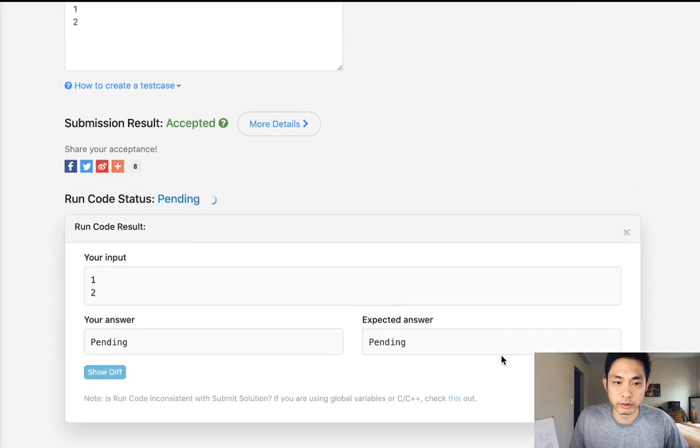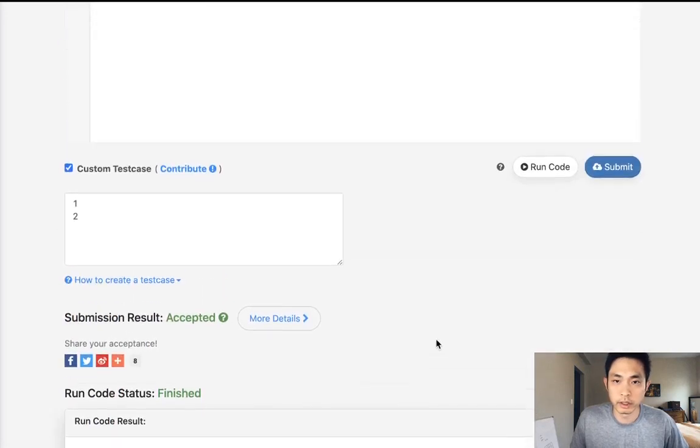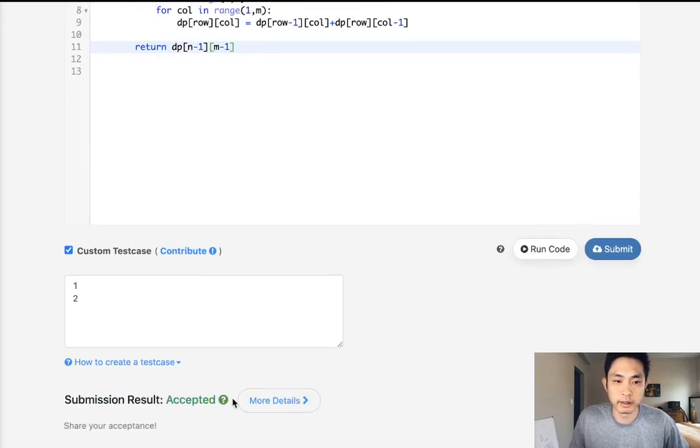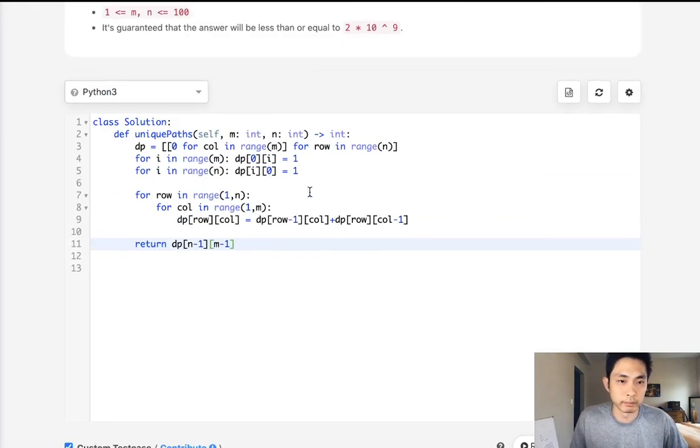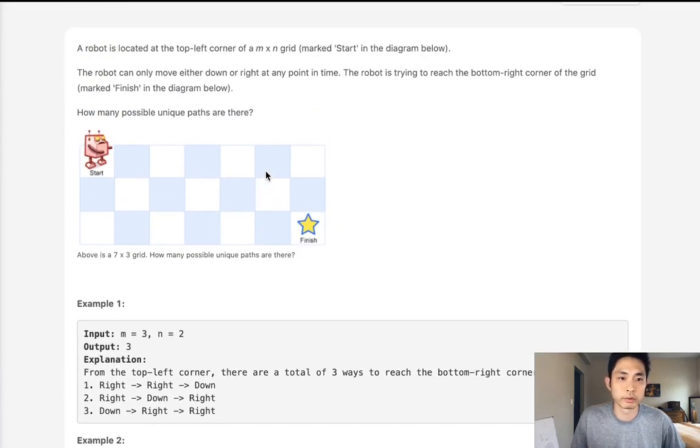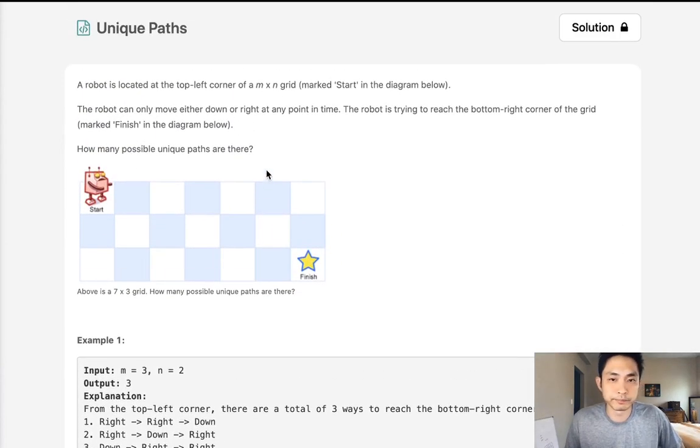Let me just make sure that works. Submit that, and there you go—accepted. So this one's not too bad. It's a very typical DP problem and one that you should definitely know. Hopefully that was clear. Thank you!